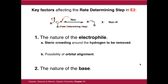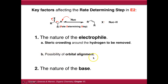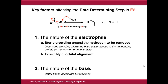Key factors affecting the rate in E2 are very similar to SN2. Steric crowding plays a part, but now it's the steric crowding around the hydrogen that you're removing, because this is where the base attacks. There is a new factor: the possibility of orbital alignment, which I'll discuss in a moment. The nature of the base is directly analogous to the nature of the nucleophile in SN2.